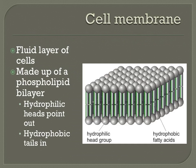The cell membrane is a fluid or flexible layer that's found on the outside of many types of cells. It is a phospholipid bilayer — a type of lipid called a phospholipid that is two layers thick.